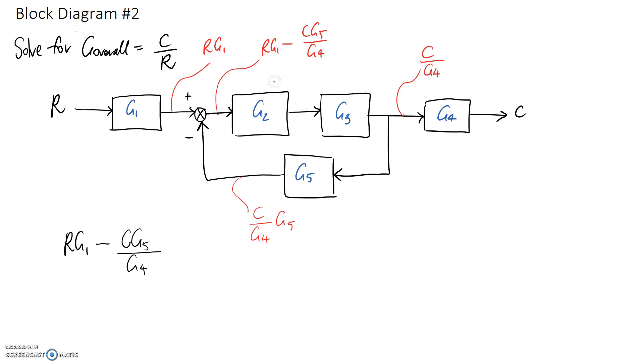We've got r g1 minus c g5 on g4 as the signal at this point. So we now need to jump across our diagram again across this g2. So we're going again in the direction of the arrows which means that we just need to multiply our signal by the transfer function inside the block. So that brings us to here. So all of this is the signal at this point. We now need to jump again. So if we need to do that that means multiplying by the transfer function inside our block which brings us back to this point.